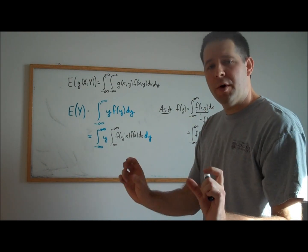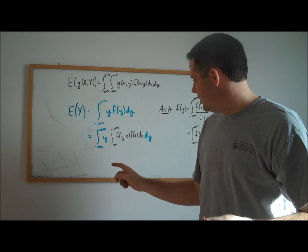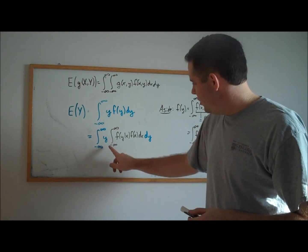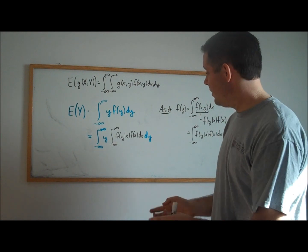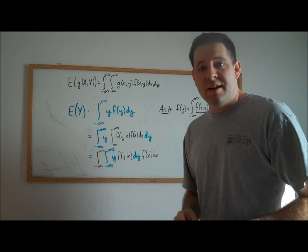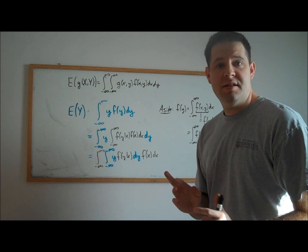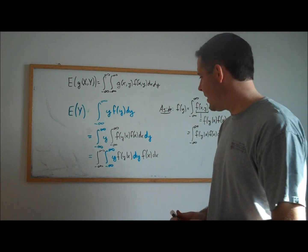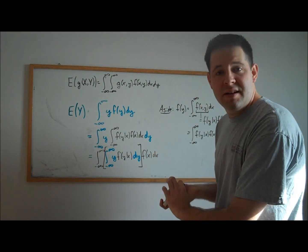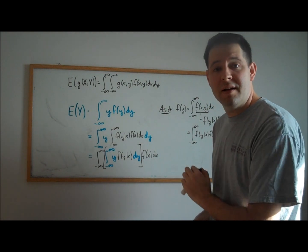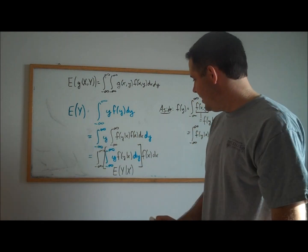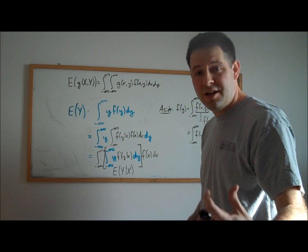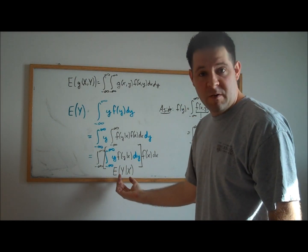The next thing we want to do is exchange the order of integration. We're going to bring the dy inside and the dx outside. Notice we have to keep the y's inside the dy's and the x's inside the dx's. Now something very useful just happened: inside of those brackets is the conditional expectation of y given x, and outside of those brackets is just taking the expectation of this function of x.